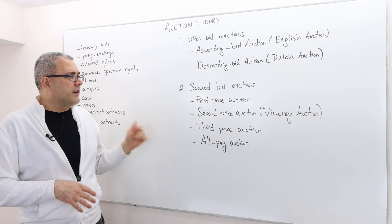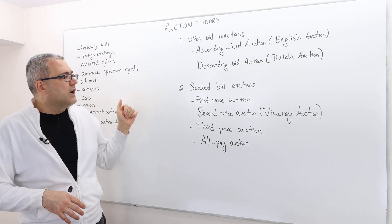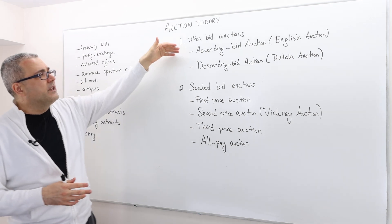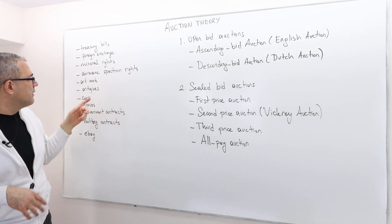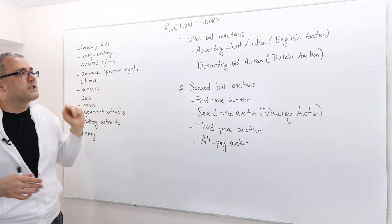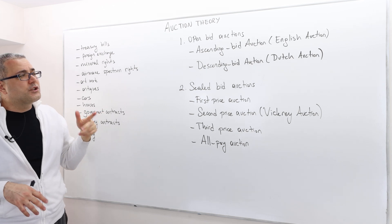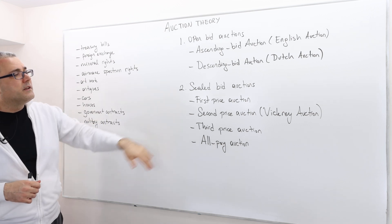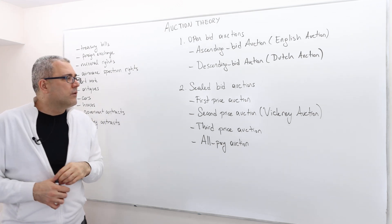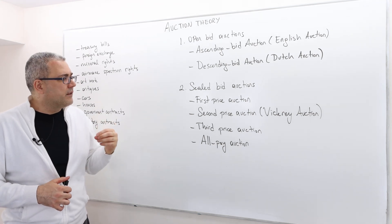Also, there are a bunch of other examples and mostly the ascending bid auction or the English auction are mostly used in, for example, antiques, artwork sales, Dutch auction. I'm not very familiar about it. Well, the sealed bid auctions are also highly used auction methods.